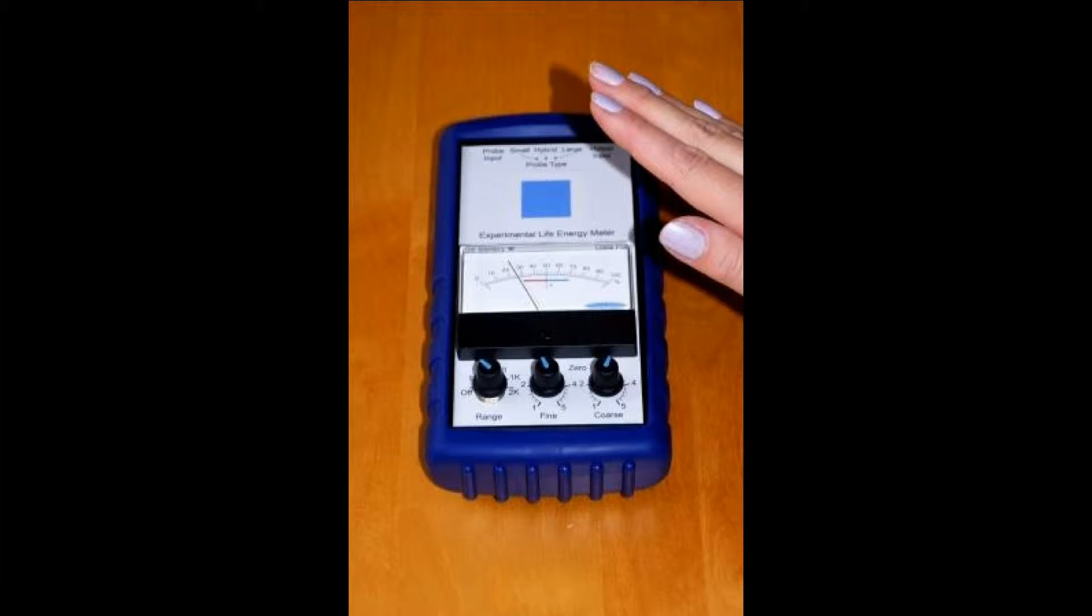The experimental life energy meter has been designed to detect living energy and minimize the readings from non-living materials. Metal and other conductive objects increase the readings and need to be avoided.